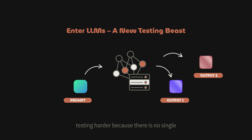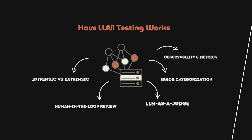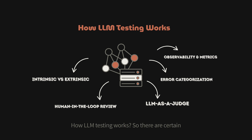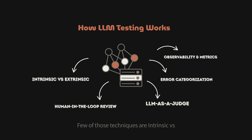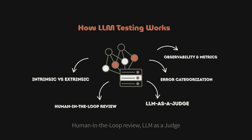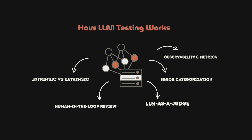That makes testing harder because there is no single expected output. Instead, we evaluate along dimensions like relevance, accuracy, fluency, safety, and usefulness. There are certain techniques used to test LLMs that we don't use in traditional testing. A few of those techniques are: intrinsic versus extrinsic evaluation, human-in-the-loop review, LLM as a judge, error categorization, and observability and metrics.